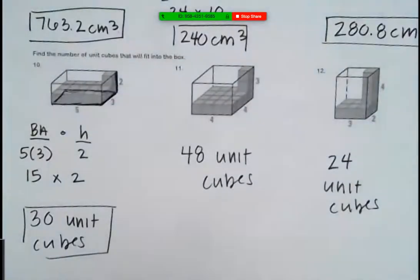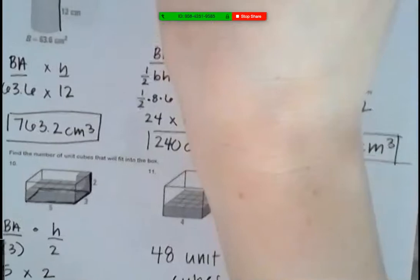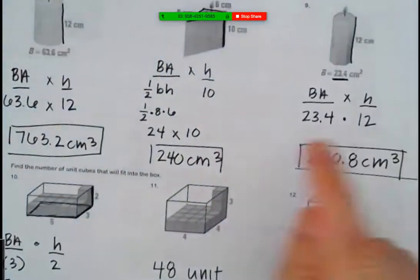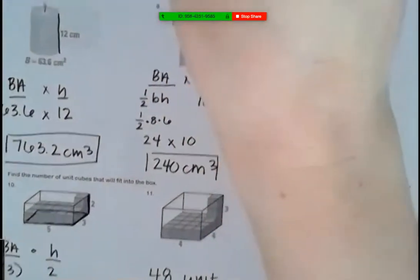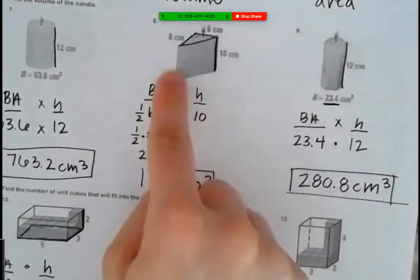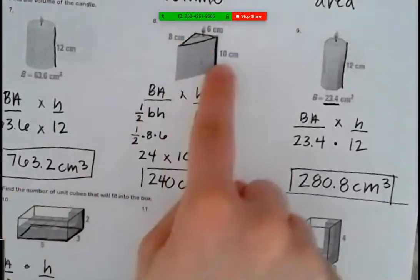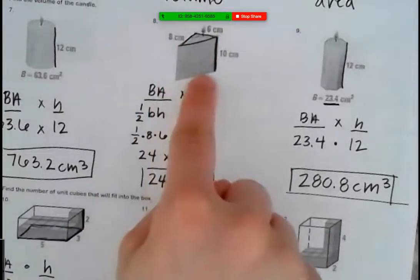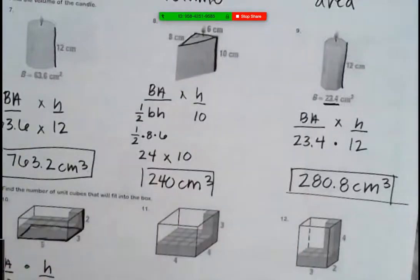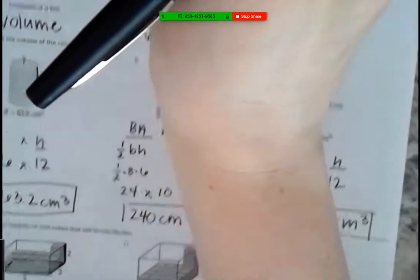I have one quick question. When we did number eight on the front side, we had it half times base times height. How come we didn't have to do that for 10, 11, and 12? Good question. So the difference between eight and then like 10, 11, and 12, do you see how this one's a triangular prism? Oh okay, gotcha. Does that make sense? Perfect.